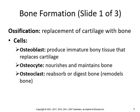Ossification — bone formation — is the replacement of cartilage with bone. There are three key cell types: osteoblasts produce immature bony tissue that replaces cartilage; osteocytes nourish and maintain the bone; and osteoclasts reabsorb or digest bone, remodeling it. So osteoblasts produce, osteocytes maintain, and osteoclasts reabsorb.